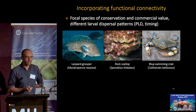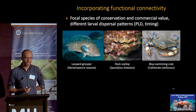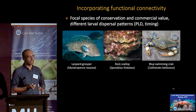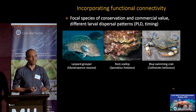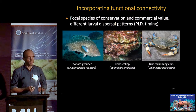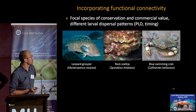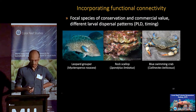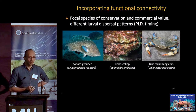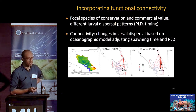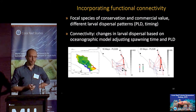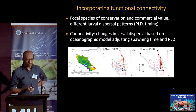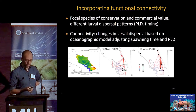For functional connectivity, we used three focal species: the leopard grouper, the rock scallop, and the blue swimming crab. We chose these because they spawn at different times, have relatively different planktonic larval durations (PLDs), have slightly different habitat requirements, and represent different taxa in the region. We had good connectivity information for all three.